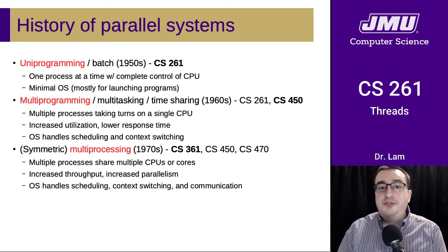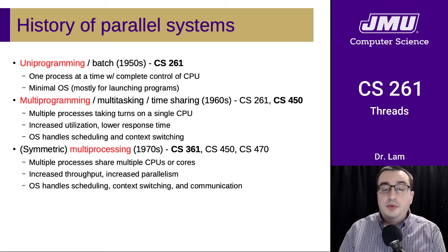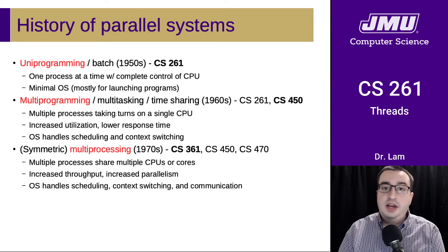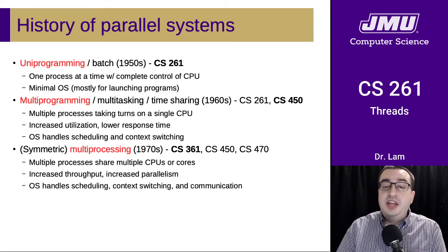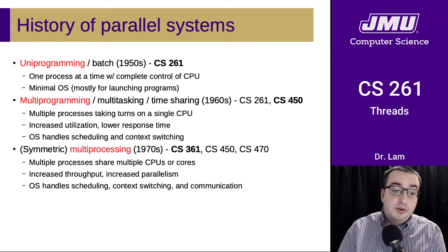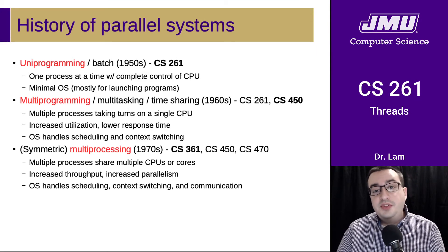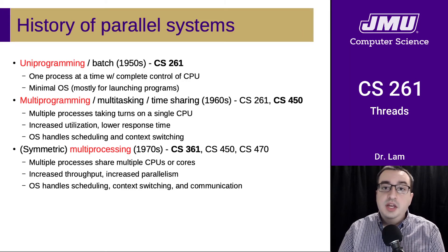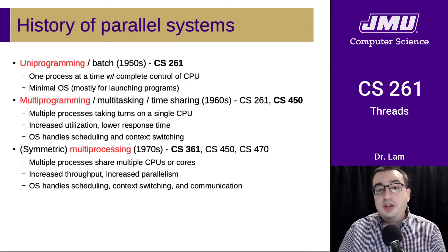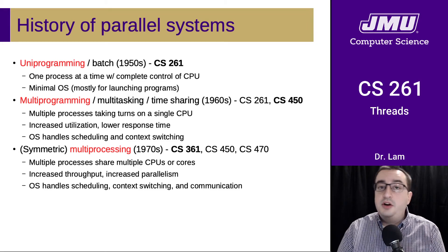Then we moved to the era of multiprocessing in the 1970s and beyond, with multiple cores in a single computer and multiple CPUs inside the same machine. Now you have multiple programs running at the exact same time — not just time-sharing, but actually running simultaneously on different hardware. This increased throughput and parallelism, but also increased the complexity of the operating system and inter-process communication. You'll spend a lot of time in CS361 on the complexities introduced by multiprocessing, and see this again in CS450 and CS470 in the context of massively parallelized and distributed computing.